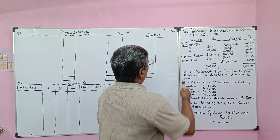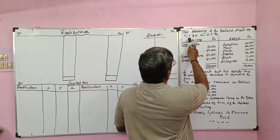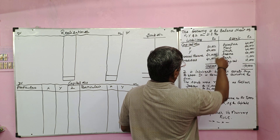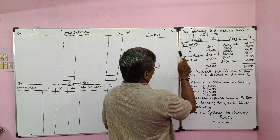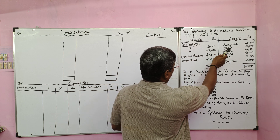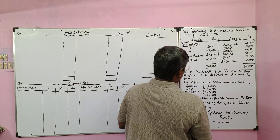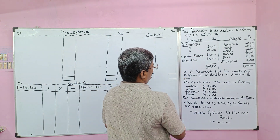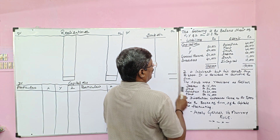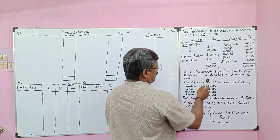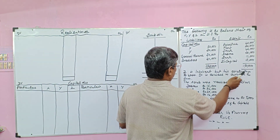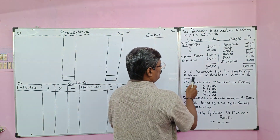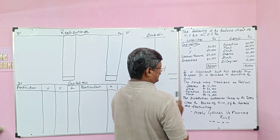Look at the board. The following is the balance sheet of X, Y and Z as on 31st March 1994. Liabilities include capital, general reserve, and creditors. Assets include furniture, plant, stock, debtors, bank, and Z capital. Z is insolvent — Z is the insolvent partner, and X and Y are the solvent partners. His estate pays Rs. 4,000.